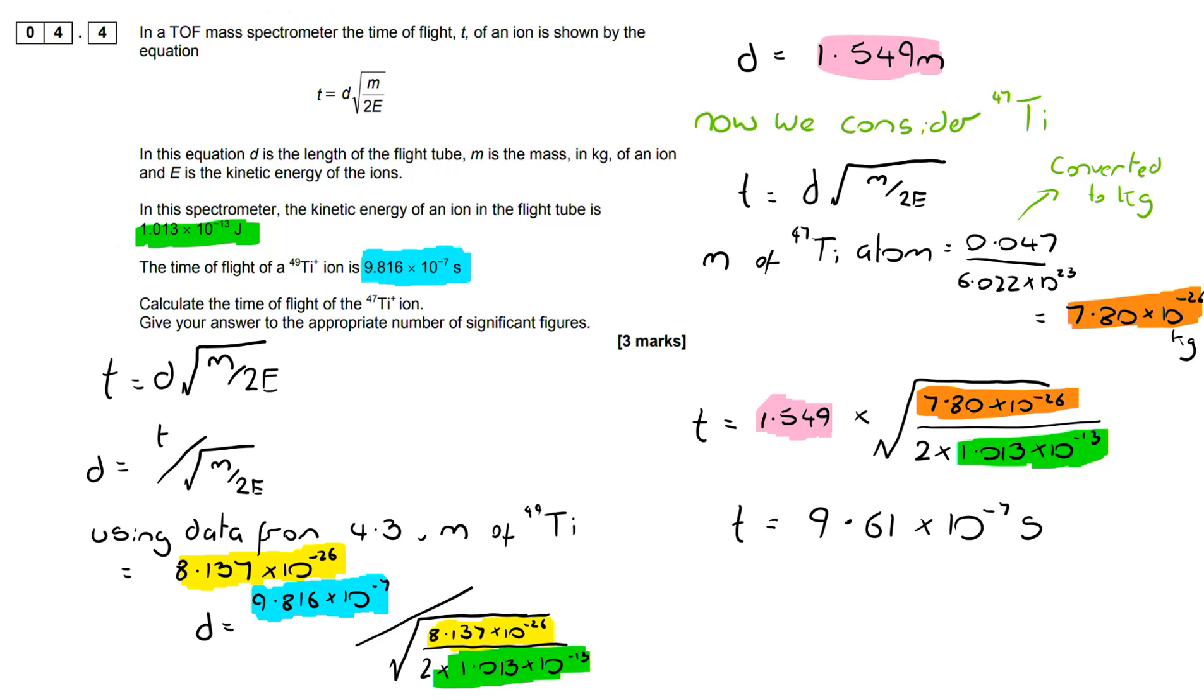Again, I'm going to look at this and ask myself, is that a reasonable answer? The time of flight for a titanium-49 plus ion was 9.816 × 10^-7. That's not dissimilar, and you would be expecting your answer for this very similar isotope with a very similar mass to be in the same region. So I would confidently move on at that point knowing that I've potentially done everything right. If it came out to 10^-14 or 10^4 or 10^-3, I'm going to start questioning where I've gone wrong.